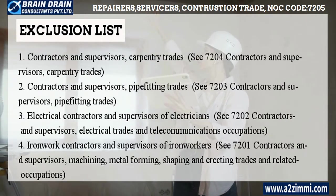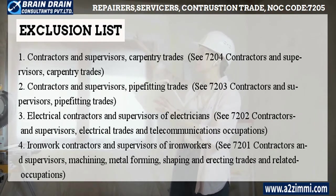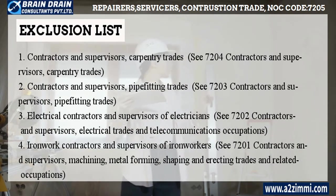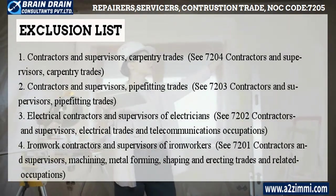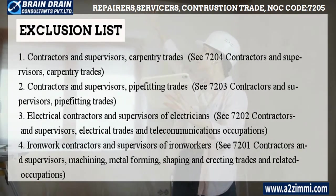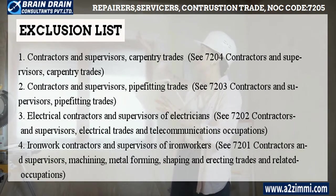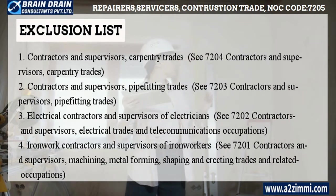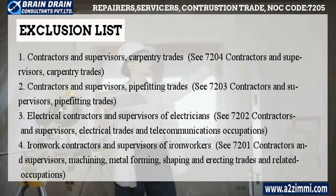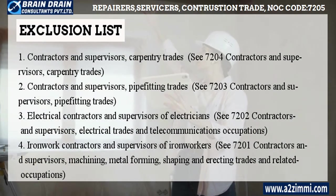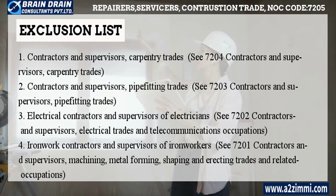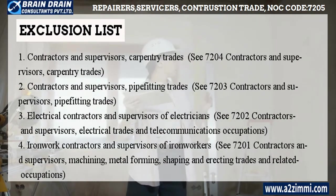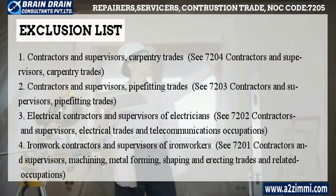Now let's see the exclusion list. Contractors and Supervisors, Carpentry Trades (C7204); Contractors and Supervisors, Pipe Fitting Trades (C7203); Electrical Contractors and Supervisors of Electricians (C7202) — Contractors and Supervisors, Electrical Trades and Telecommunications Occupations; Ironwork Contractors and Supervisors of Ironworkers (C7201) — Contractors and Supervisors, Machining, Metal Forming, Shaping and Erecting Trades and Related Occupations.